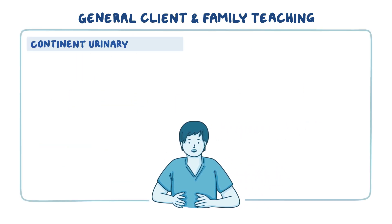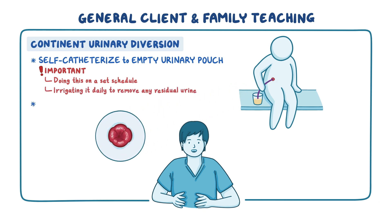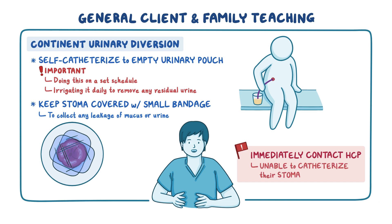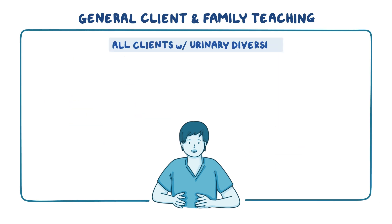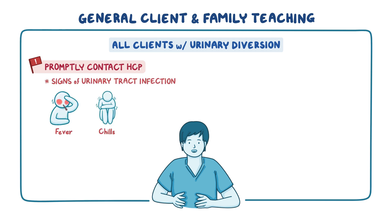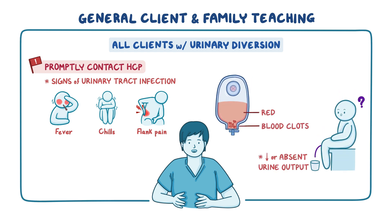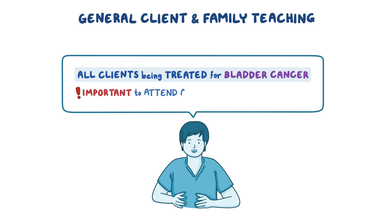Teach clients with a continent urinary diversion how to self-catheterize to empty their urinary pouch, emphasizing doing this on a set schedule and irrigating it daily to remove residual urine. Remind them to keep their stoma covered with a small bandage to collect any leakage of mucus or urine, and to immediately contact their healthcare provider if they are unable to catheterize their stoma. For all clients with a urinary diversion, stress the importance of contacting their healthcare provider for signs of urinary tract infection such as fever, chills, or flank pain, red urine or blood clots, or decreased or absent urine output. Finally, stress the importance of attending all follow-up appointments for all clients being treated for bladder cancer.